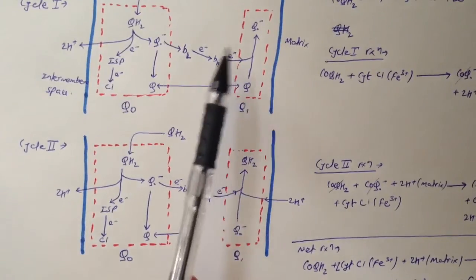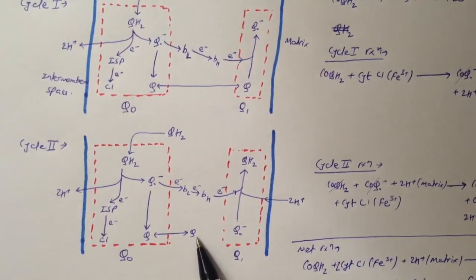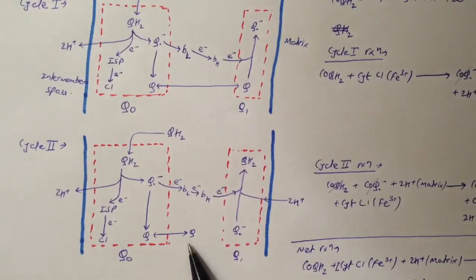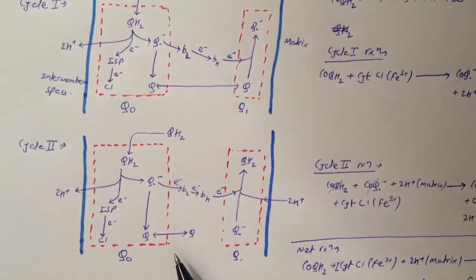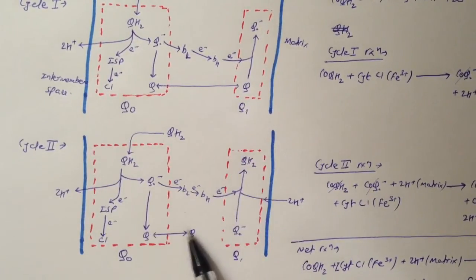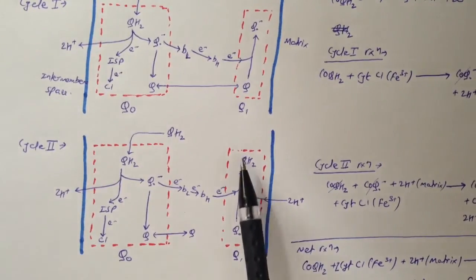In this case the Q does not go and bind to the Qi site, because there is already the Q•⁻ from cycle I still there. So this Q exits into the inner mitochondrial membrane — where coenzyme Q can exist as QH₂, Q, or Q•⁻ and is always fluid in the membrane. Meanwhile, the Q•⁻ at Qi receives one electron from cytochrome bH, plus 2 hydrogens from the matrix, and is converted to QH₂.